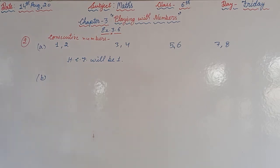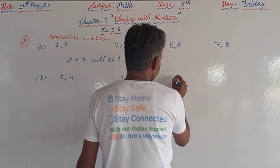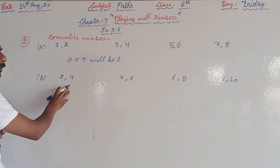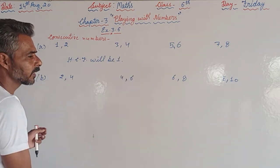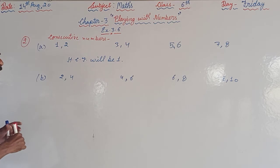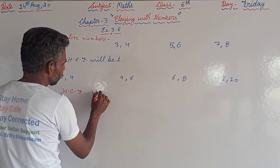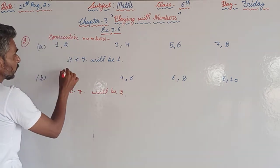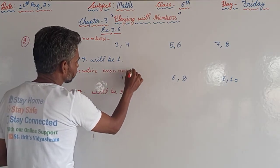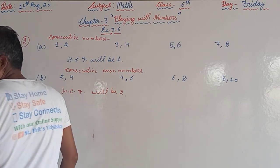For part (b): what is the HCF of two consecutive even numbers? If we take consecutive even numbers such as 2,4 or 4,6 or 6,8 or 8,10, we don't leave any even number between them. For consecutive even numbers, the HCF will always be 2.